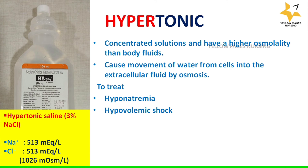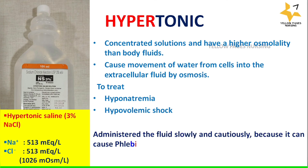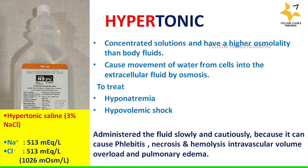Hypertonic solution provides 513 milliequivalents per liter of sodium and 513 milliequivalents per liter of chloride, totaling 1026 milliequivalents per liter. Hypertonic solutions are administered slowly and cautiously because they can cause phlebitis, necrosis, hemolysis, intravascular volume overload, and pulmonary edema.